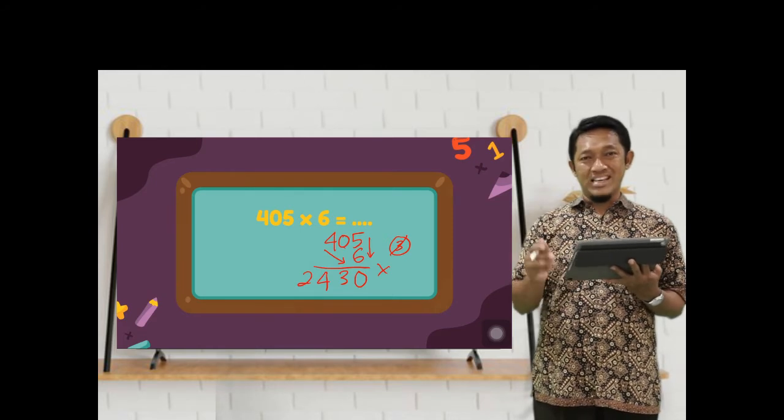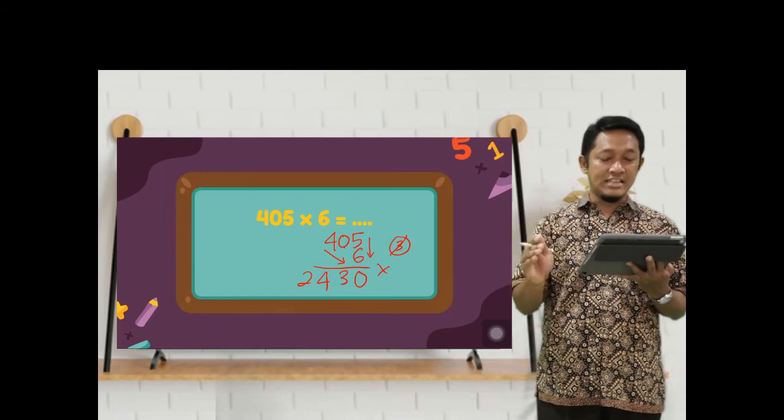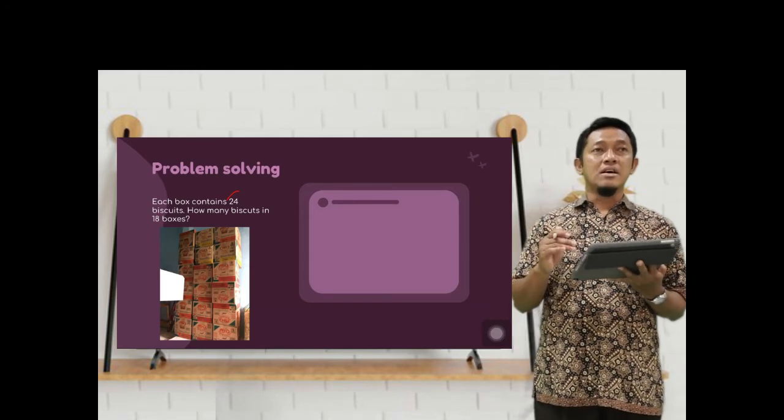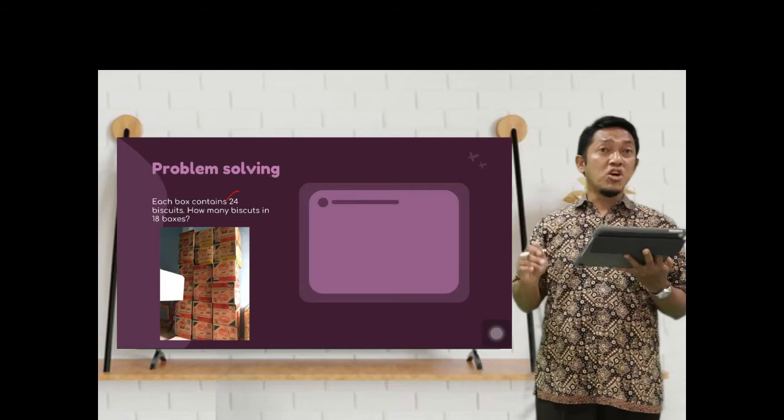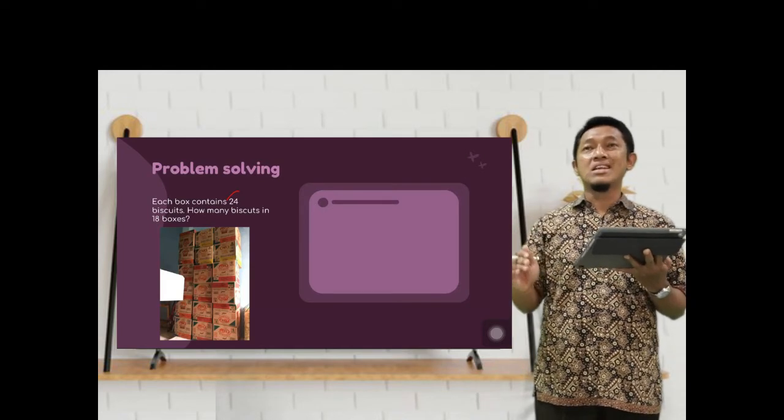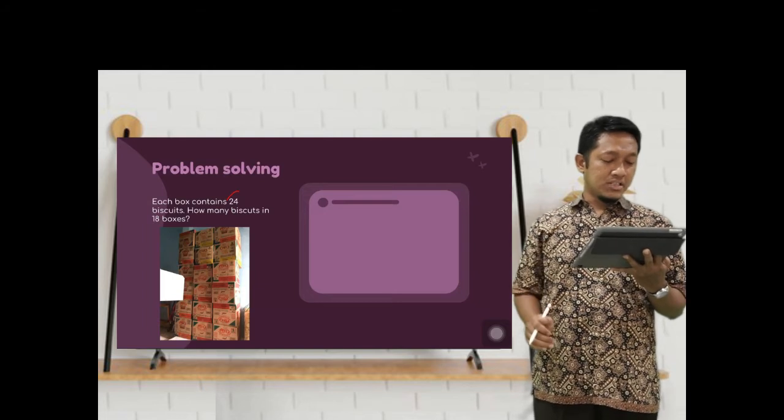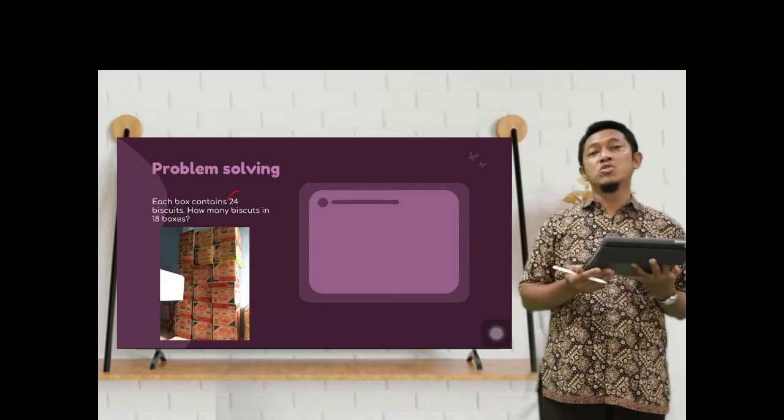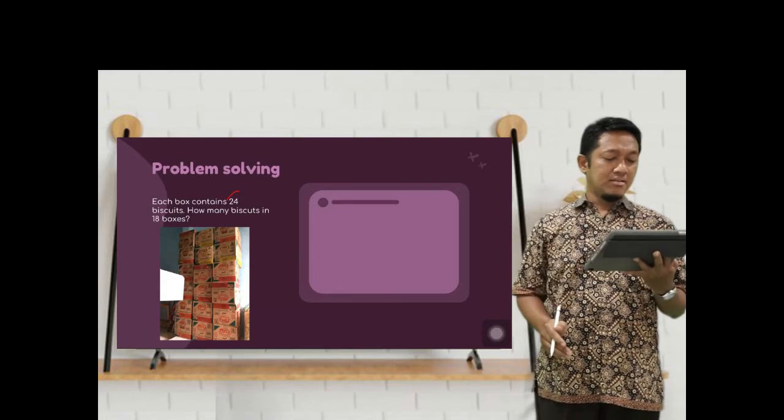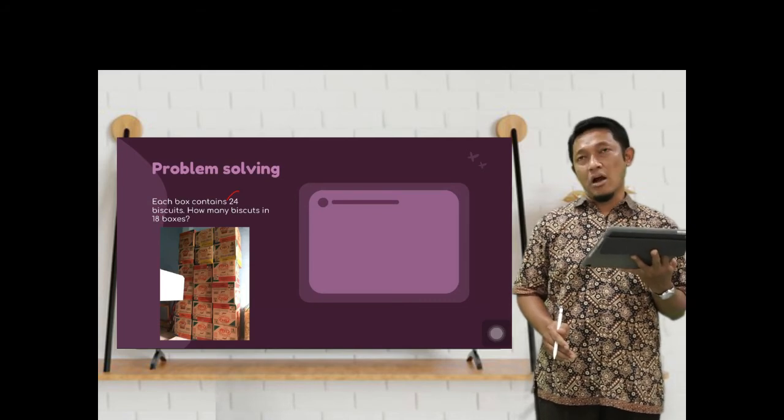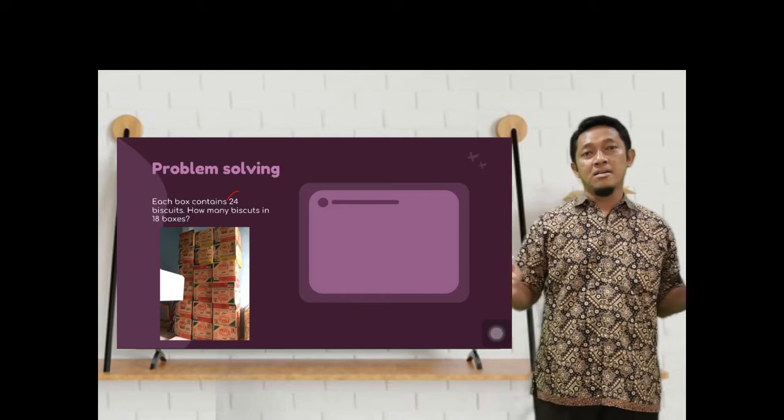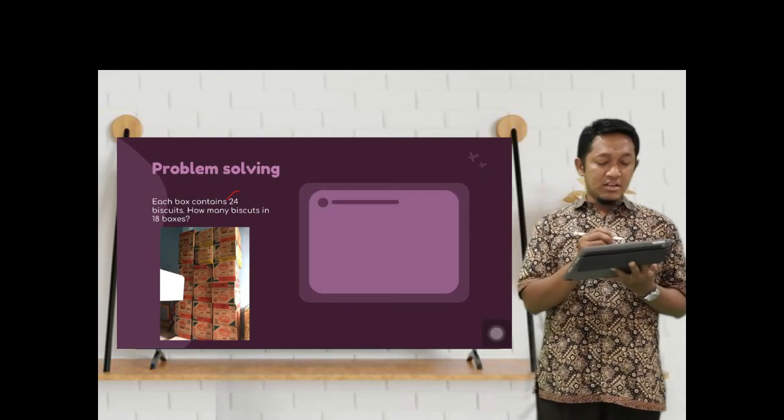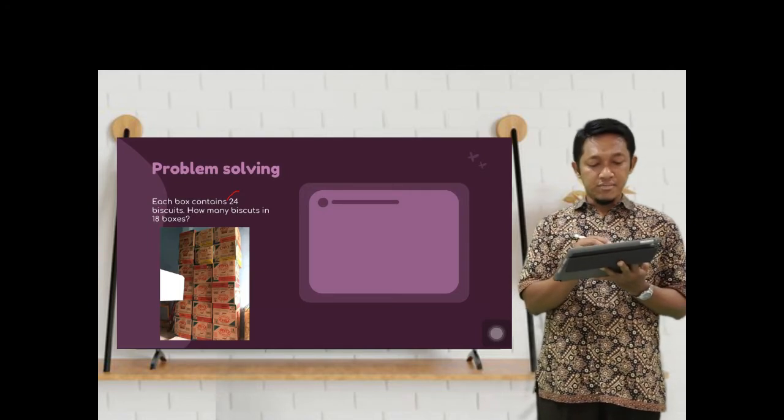Next is about problem solving. We will use this topic for the next lesson. Problem solving. This is a story problem about multiplication. Each box contains 24 biscuits. In each box, there are 24 biscuits. How many biscuits in 18 boxes? If there are 18 boxes, how many biscuits are there? Let's try to find out together.